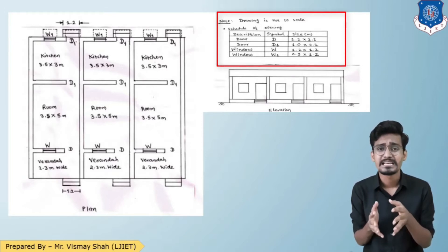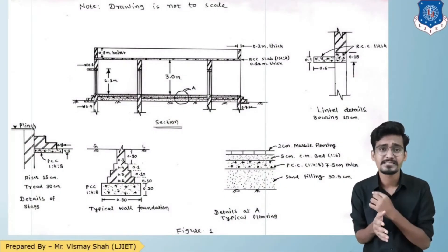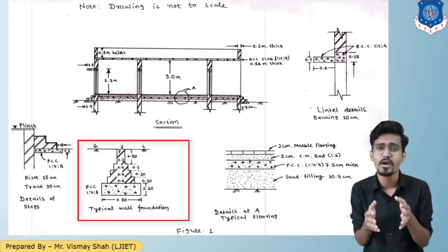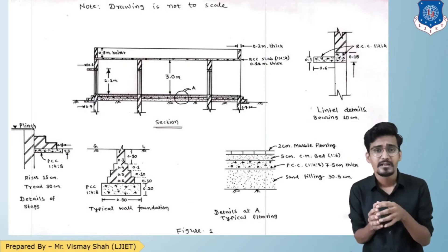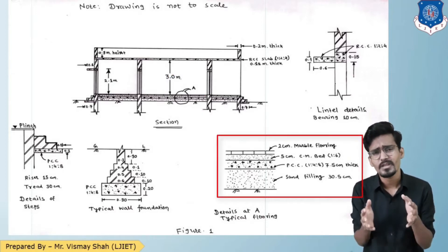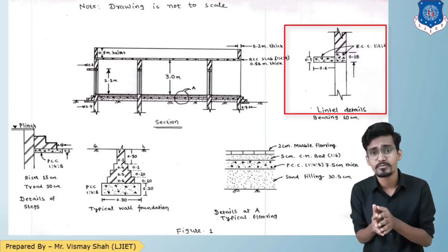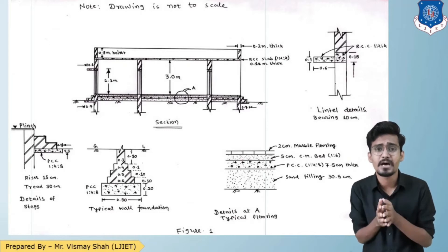Chajjas are provided above the kitchen door and window only. The elevation is also given, and above that you can see the opening schedule of doors and windows. Looking at the section drawing, the foundation details are given as 0.90 meter base width. Above that there is brick footing of widths 0.6, 0.5, 0.4, and 0.3 meter. In the main section, notation 'A' represents the flooring details of the entire drawing. The slab zooming view shows the lintel and chajja structure.